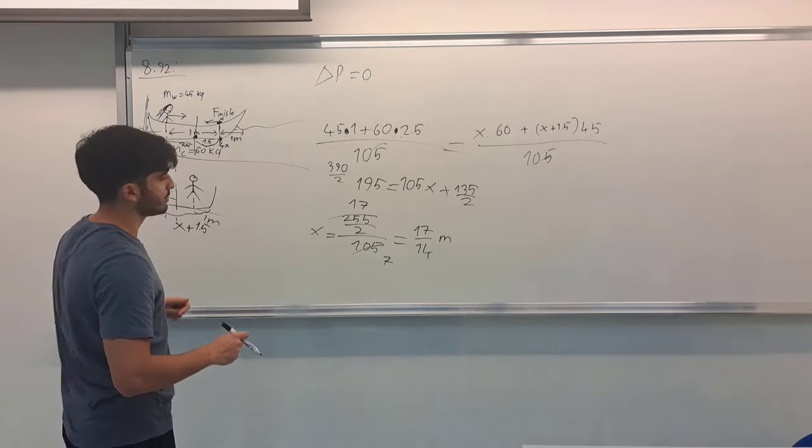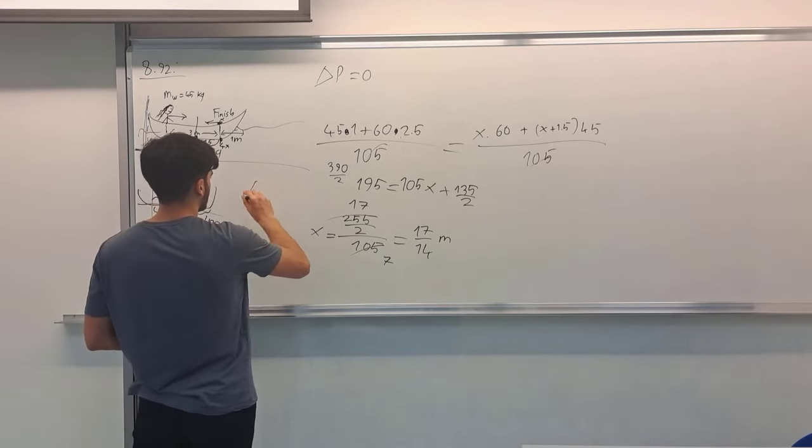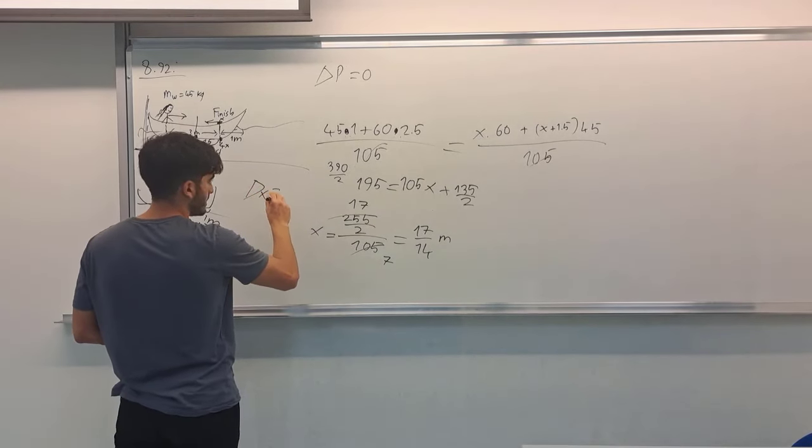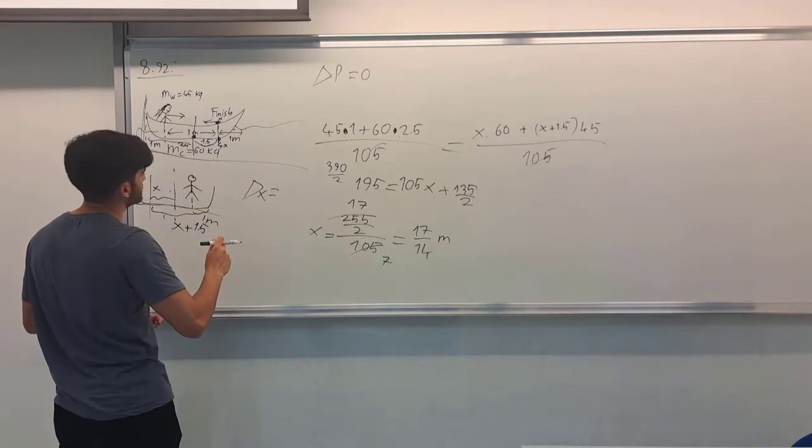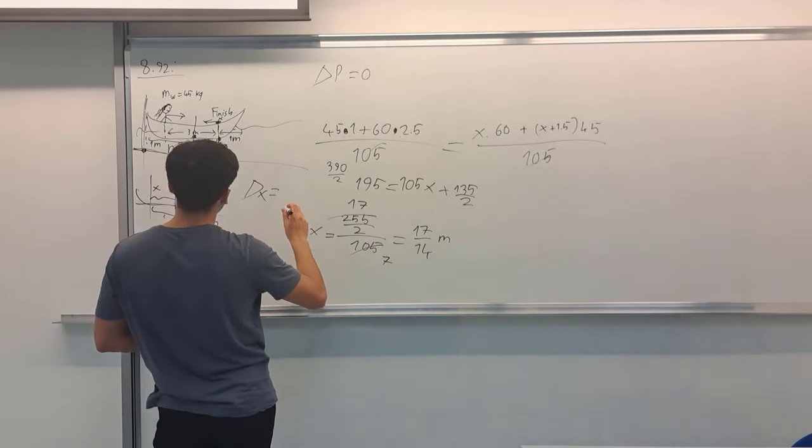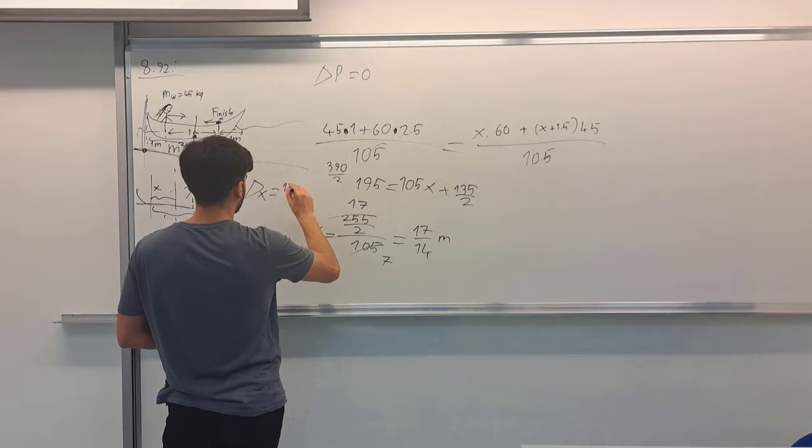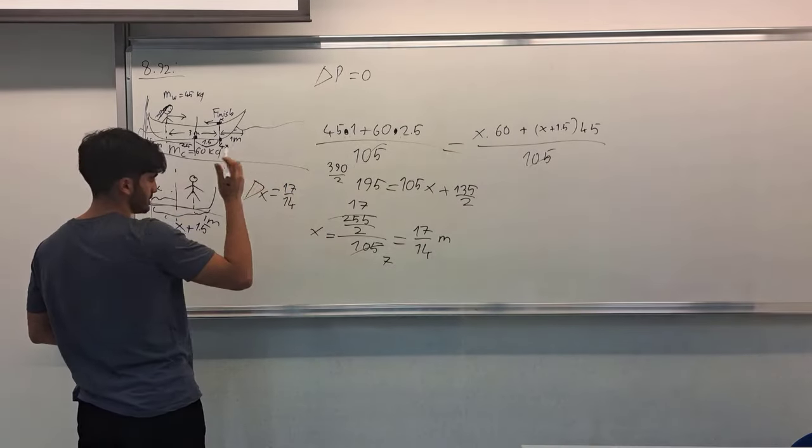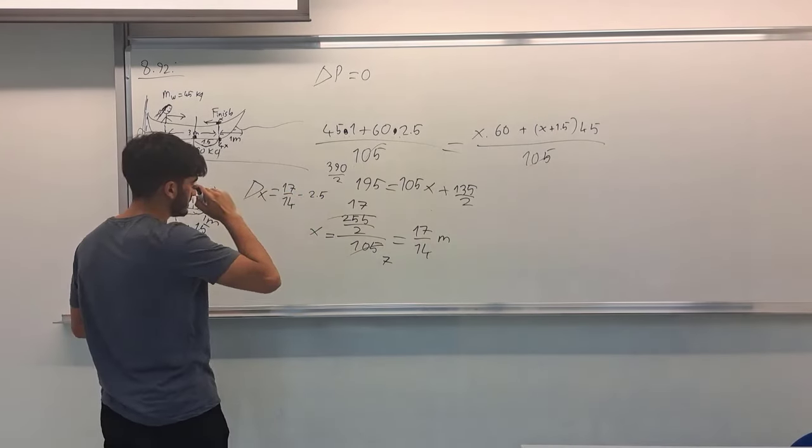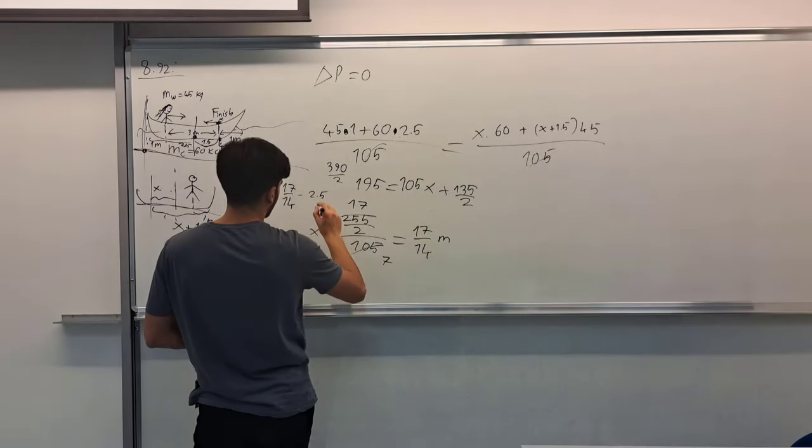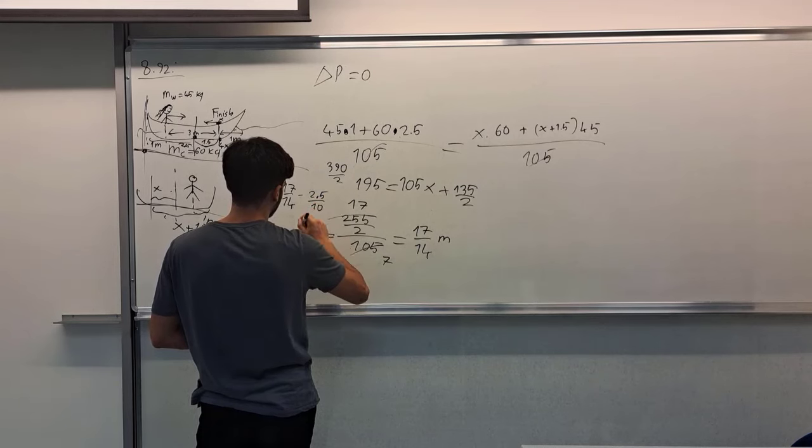For how much the canoe moves away, I should calculate delta x, which is equal to the final position 17 over 14 minus the initial position, which is 2.5. And I can calculate it by 25 over 10.